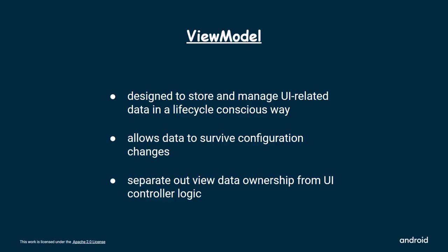This management requires a lot of maintenance, and where the object is recreated for a configuration change, it's a waste of resources since the object may have to reissue calls it has already made. UI controllers such as activities and fragments are primarily intended to display UI data, react to user actions, or handle operating system communication such as permission requests. Requiring UI controllers to also be responsible for loading data from a database or network adds bloat to that class. Assigning excessive responsibility to UI controllers can result in a single class that tries to handle all of an app's work by itself instead of delegating work to other classes. Assigning excessive responsibility to UI controllers also makes testing a lot harder. It's easier and more efficient to separate out view data ownership from UI controller logic.